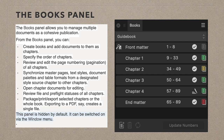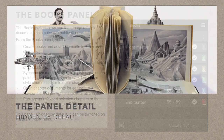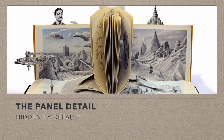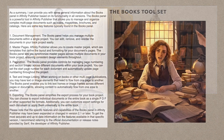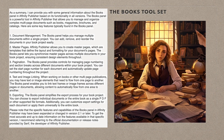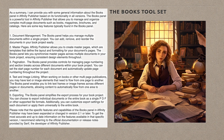This panel is hidden by default, as mentioned before — it can be switched on via the Window menu. The Books panel is a powerful tool in Affinity Publisher that allows you to manage and organize complex multi-page documents such as books, magazines, brochures, and catalogues.